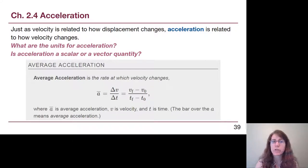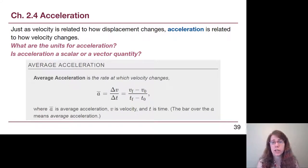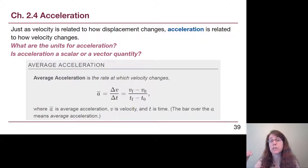Let's think about two questions. What are the units for acceleration? If we look at how the equation is built — velocity is in meters per second and time is in seconds — then acceleration is in units of meters per second per second, or meters per second squared. The seconds unit on the bottom is squared.